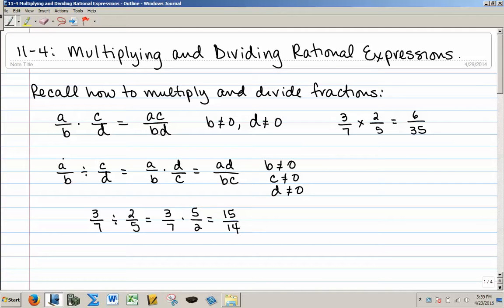Now dividing fractions, a over b divided by c over d, remember the rule that you multiply by the reciprocal of the second fraction. Keep the first fraction the same, change the division to a multiplication, and flip your second fraction, and then just multiply across the top, and multiply across the bottom.